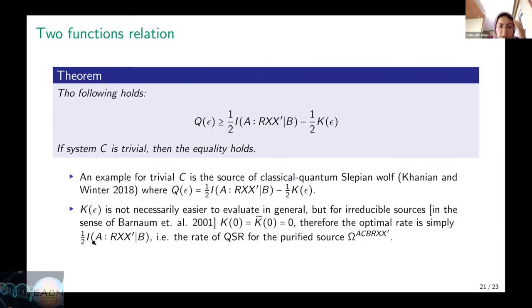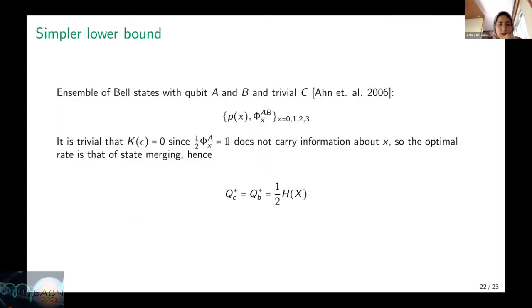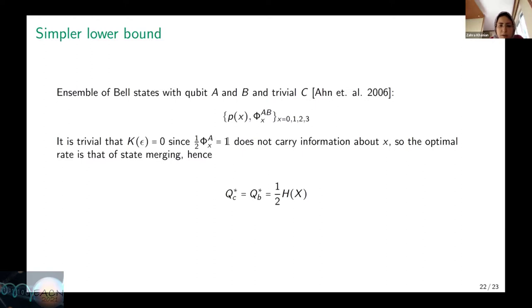The other important example is the one considered by Han et al. in 2006. They consider an ensemble of pure states between Alice and Bob, with system A and B being qubits and system C trivial. For this specific source, the reduced state on system A equals the identity and therefore doesn't depend on X. We can show that the mutual information between X and the environment system is zero, so k(ε) = 0 and we don't have the continuity issue. For this source, the optimal compression rate, considering both block fidelity and per-copy fidelity, is equal to half the entropy of classical register X.